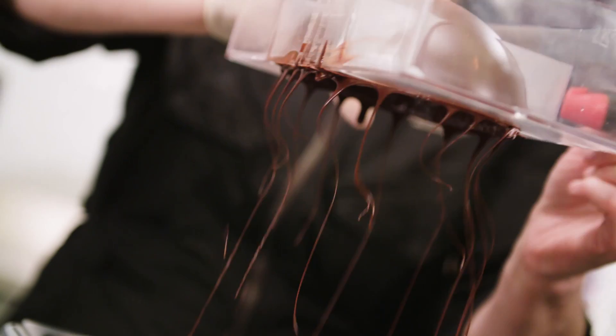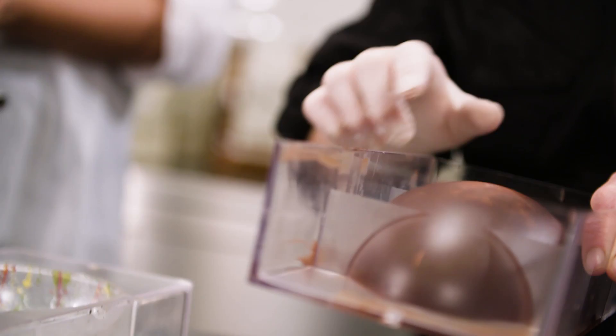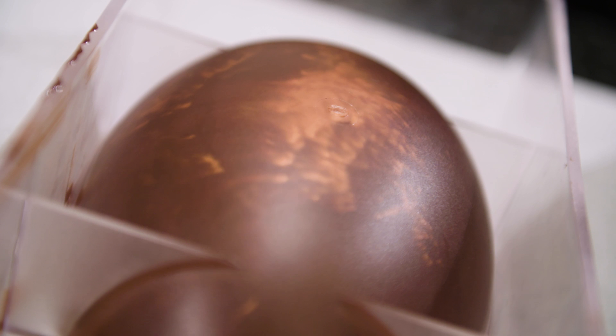I scrape off the excess chocolate and place the mould on a piece of paper for about five minutes. This will create a nice clean edge on the chocolate shell, which will make it easier for me to put my two egg halves together later.